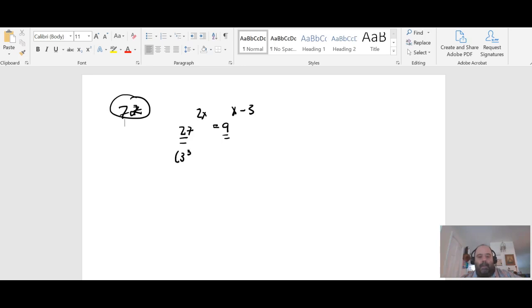So I can make this 3 to the 3rd to the 2x is equal to 3 squared to the x minus 3.